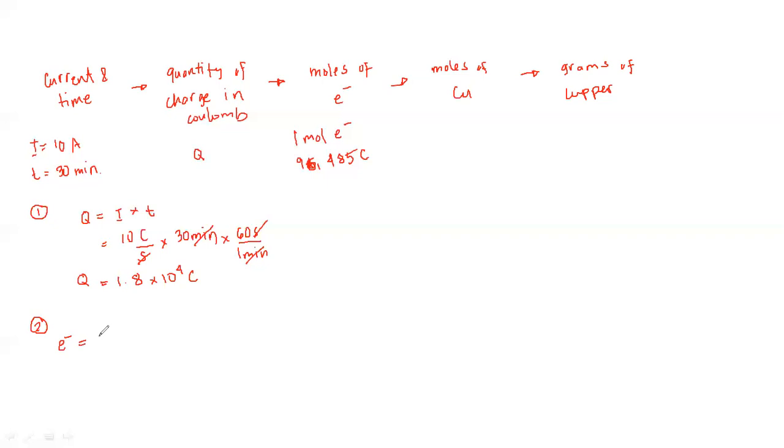We're going to multiply 1.8 × 10^4 coulombs by this ratio, wherein 1 mole of electrons is equivalent or has a charge of 96,485 coulombs. Therefore, the number of electrons is 1.87 × 10^-1 moles of electrons.